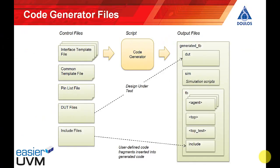This diagram shows all of the files used by the code generator. On the left hand side we've got control files and DUT files that are read by the code generator, and on the right hand side we've got the test bench code that's generated. The control files are created in EDA Playground as tabs on the left hand side of the window and the DUT files are created as tabs on the right hand side. The control files include one interface template file for each interface to the design under test, a common template file with common settings, a pin list file describing how variables within the interface template files are connected to the ports on the DUT, and include files containing user-defined code fragments that get included within the generated code.